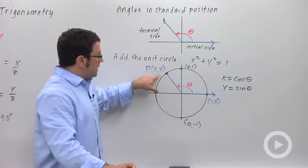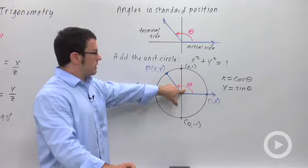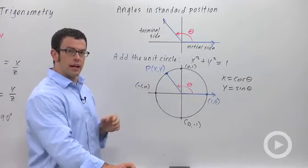This point, of course, will be unique. It'll depend uniquely on the angle theta. So for different angle thetas, you're going to get different sine and cosine values.